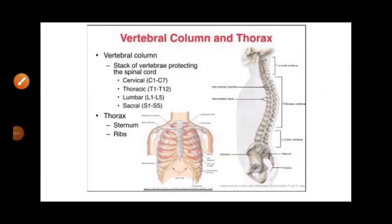Hello everyone. Today we are going to learn about the vertebral column and the structure of the thoracic cage. So about the skull bones — what is the skull bone, the types of skull bones: the facial bone, cranial bone. Then associated bones are there, the ear ossicles and the hyoid bone. So up to this, all our discussion is completed.